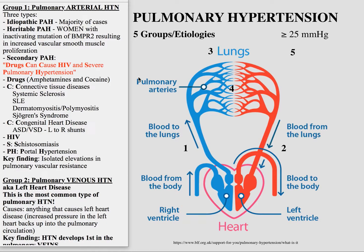The secondary causes of pulmonary arterial hypertension are harder to remember. The mnemonic I use is: 'Drugs can cause HIV and severe pulmonary hypertension.' So let's break that down. First is drugs — think amphetamines and cocaine. The first C is for connective tissue diseases: systemic sclerosis, lupus, dermatomyositis, polymyositis, and Sjogren's syndrome. These connective tissue diseases can also cause pulmonary hypertension.